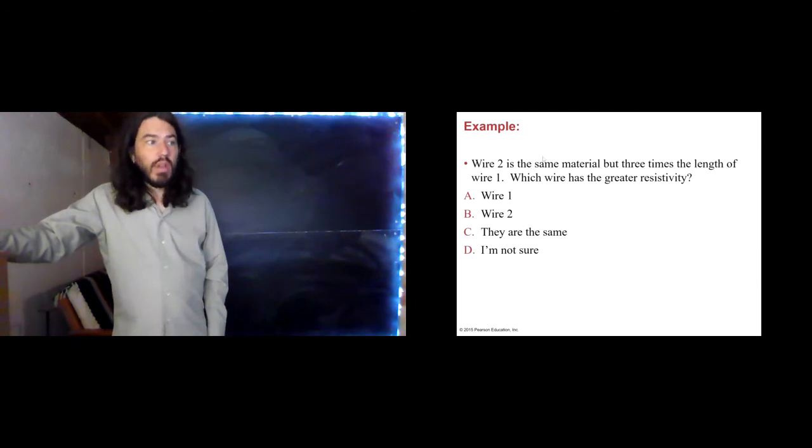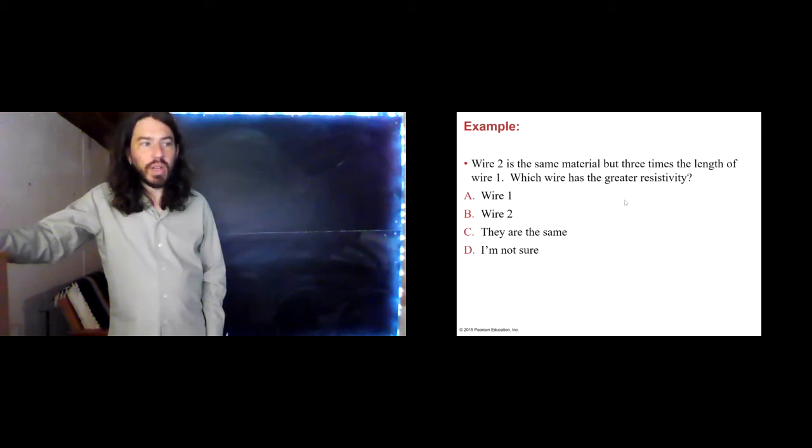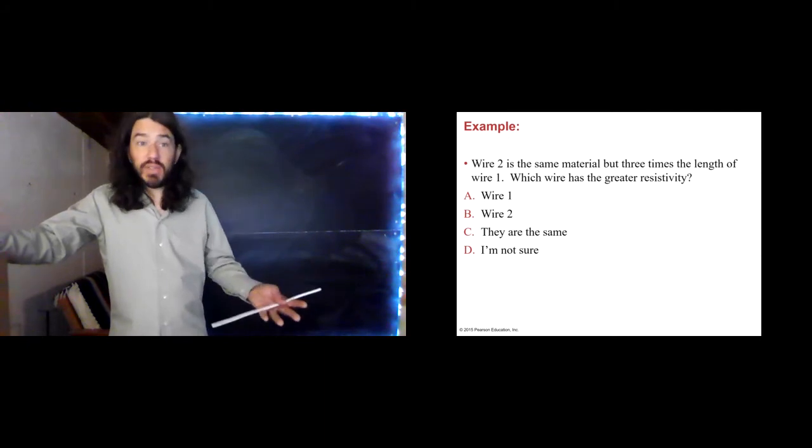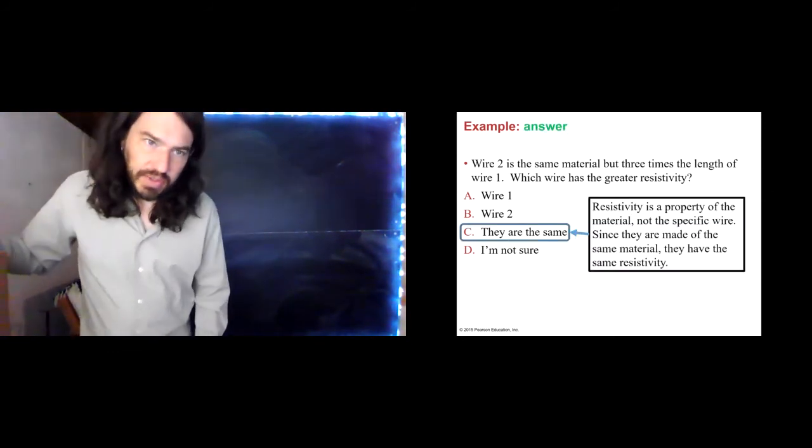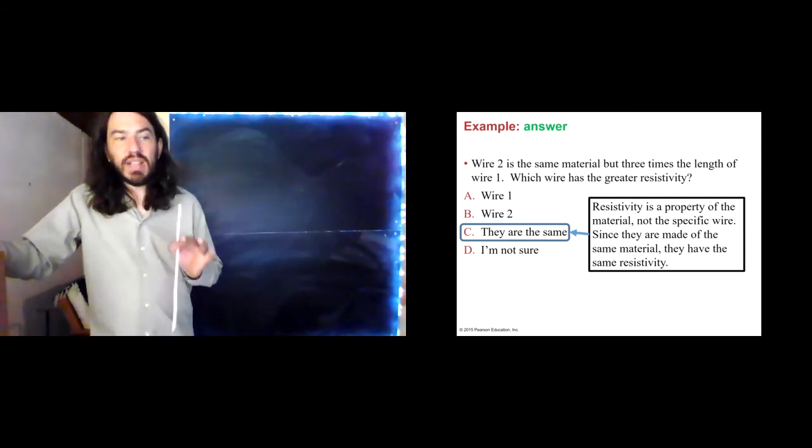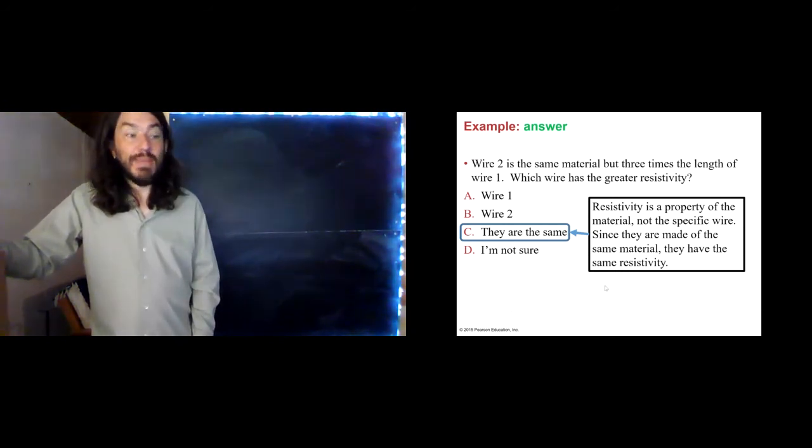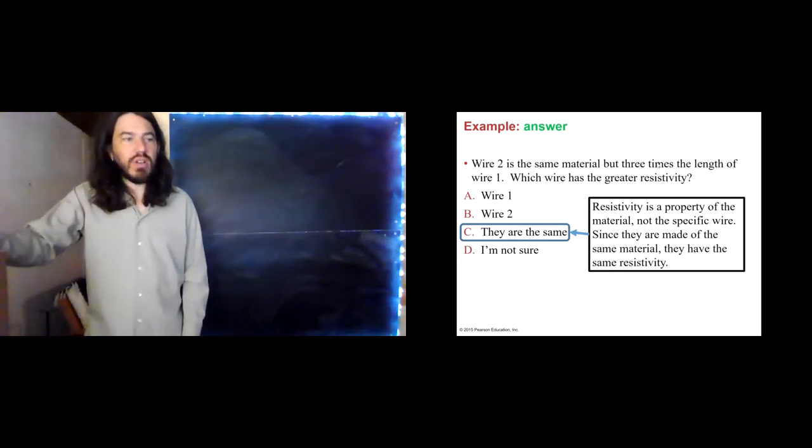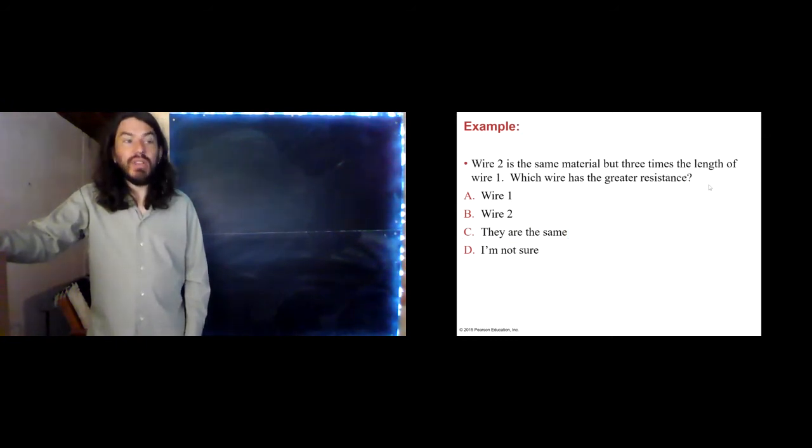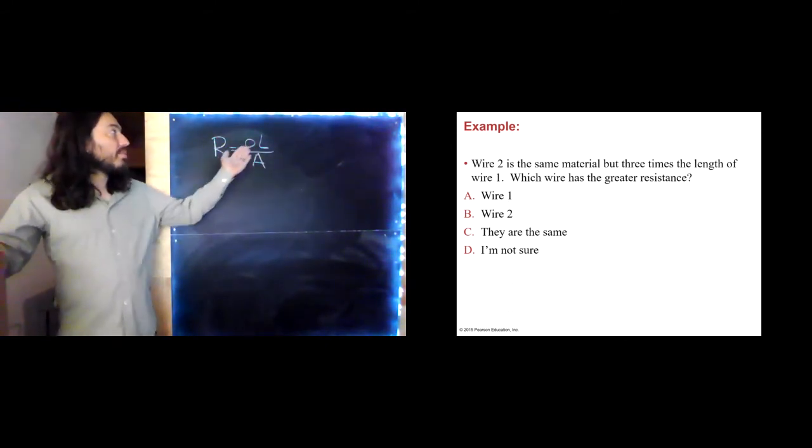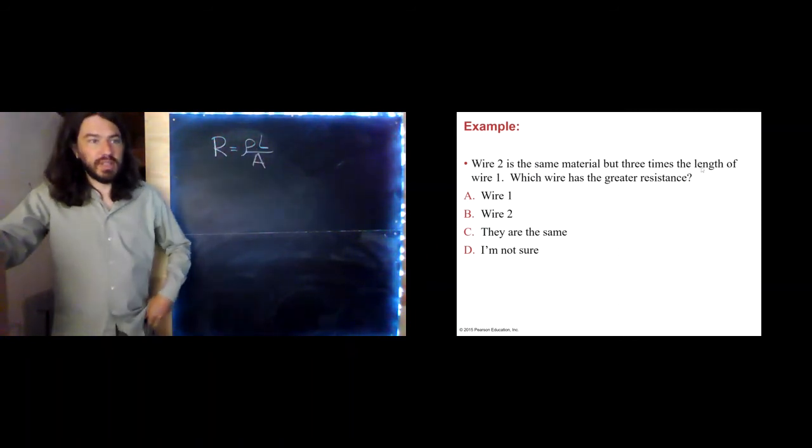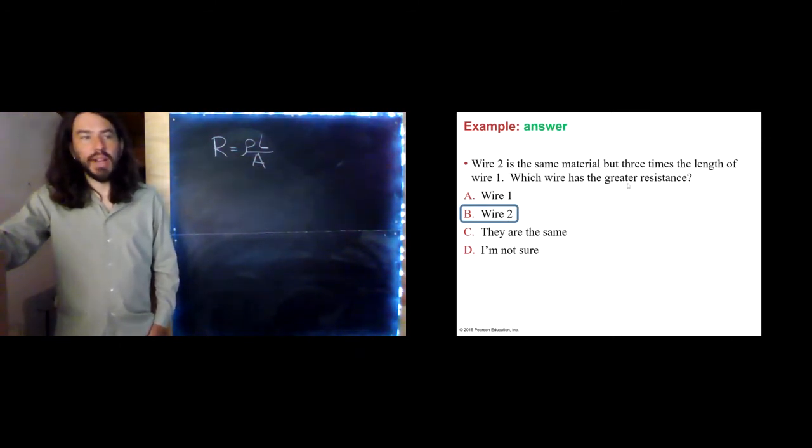Let's do a couple of examples. Wire 2 is the same material, but three times the length of wire 1. Which wire has the greatest resistivity? Why don't you pause the video? Think about it. I'll see you on the other side. Well, this one almost goes into the category of a trick question. Resistivity is a property of the material, not the specific wire. So, they are made of the same material, so they have the same resistivity. So, it's not really a trick question. We just have to be really careful with the wording. What about the question you might have thought I asked? Wire 2 is the same material, but three times the length of wire 1. Which has the greater resistance? Okay, well, we wanted to look at this equation, and we see that the resistance is proportional to the length. So, three times the length, we should get three times the resistance. And, indeed, we do get a greater resistance with wire 2. Specifically, it is three times the resistance.